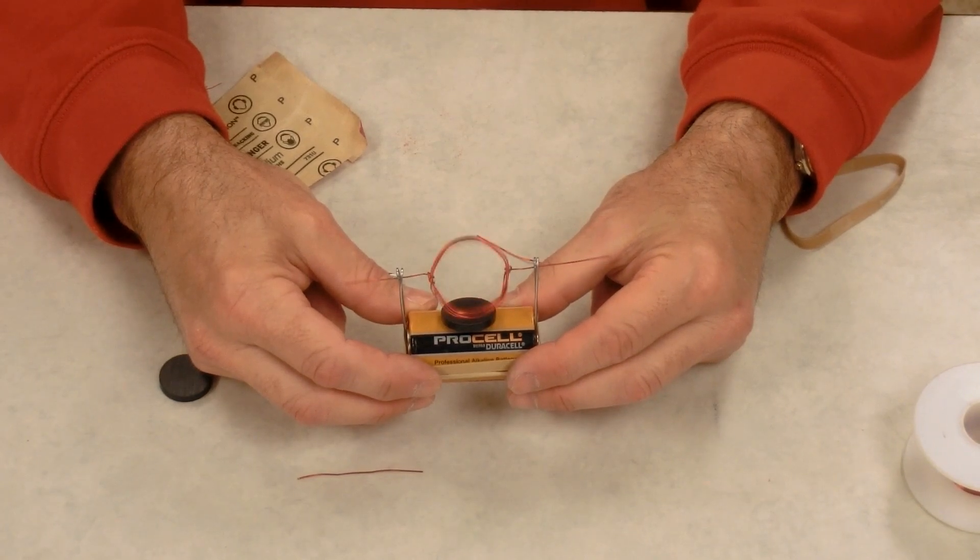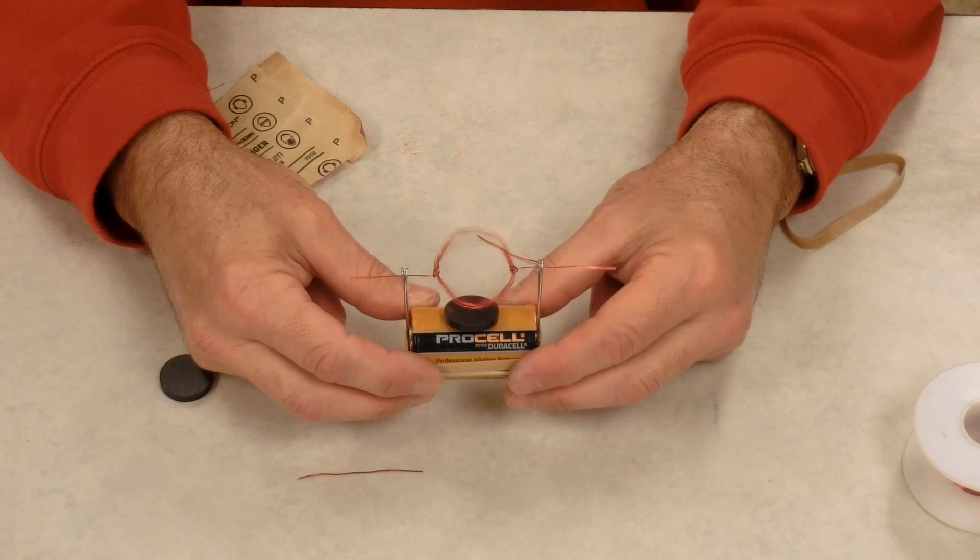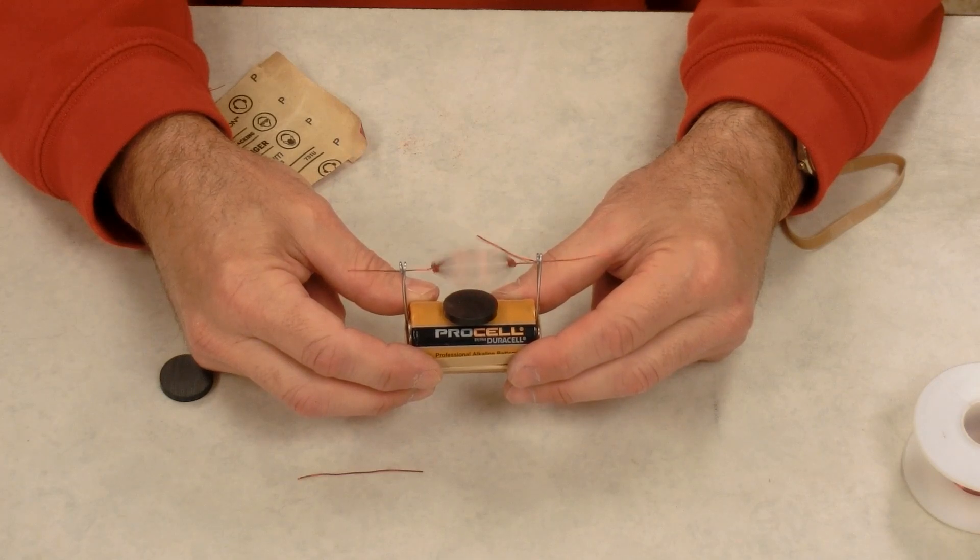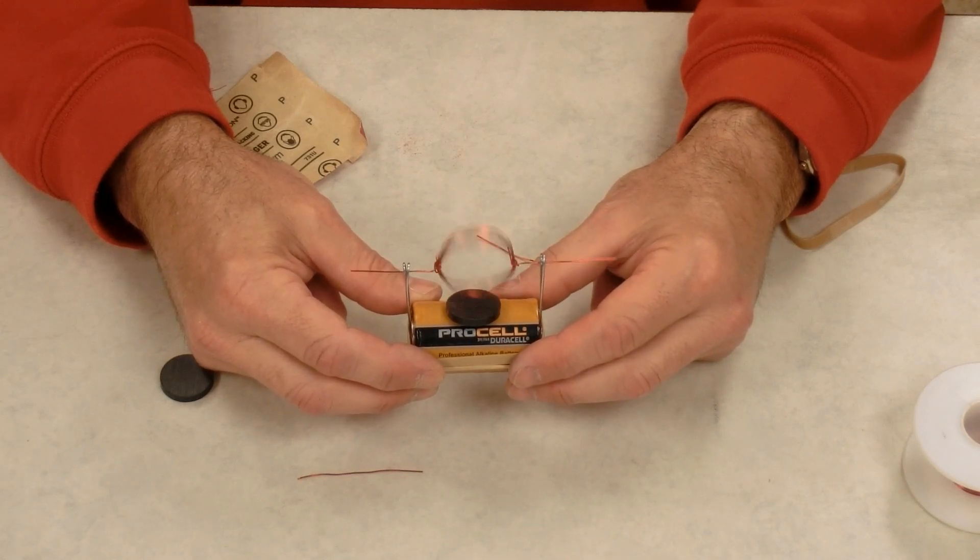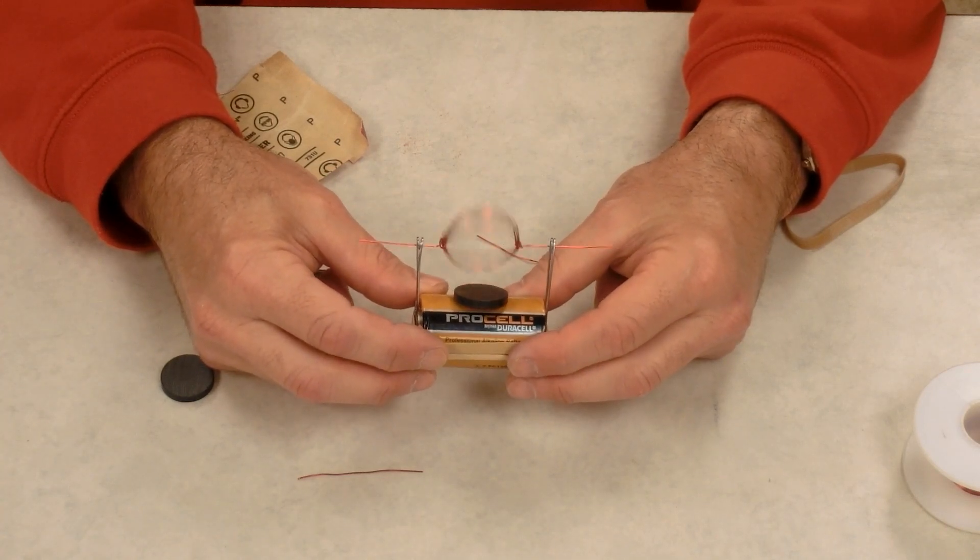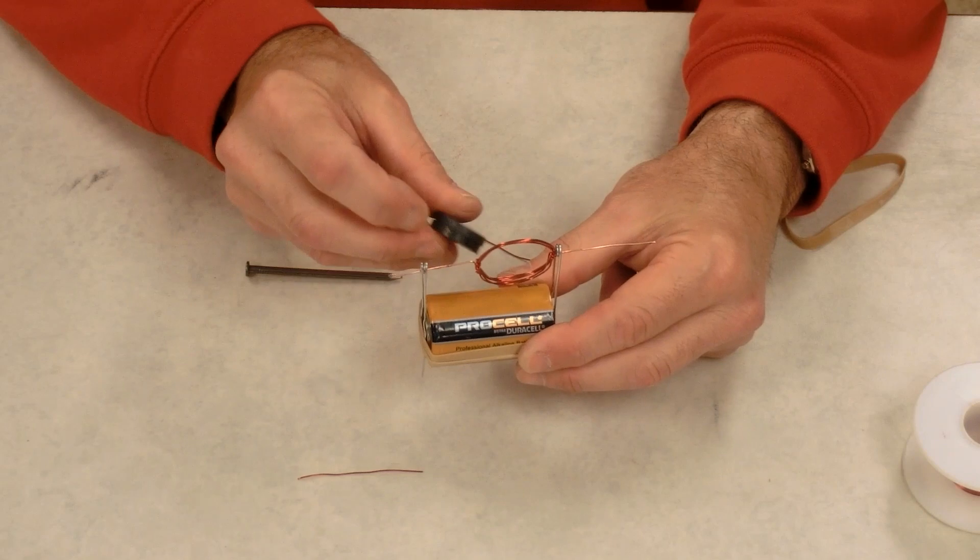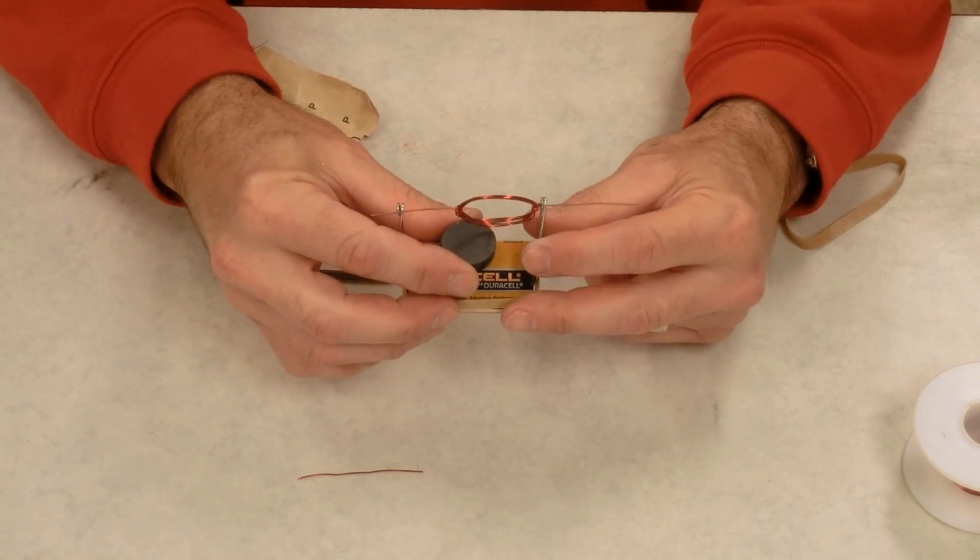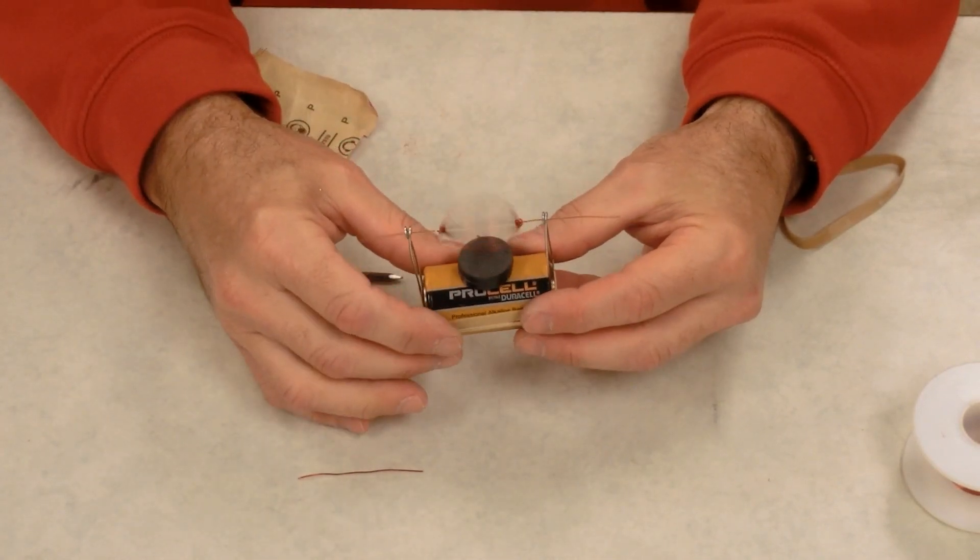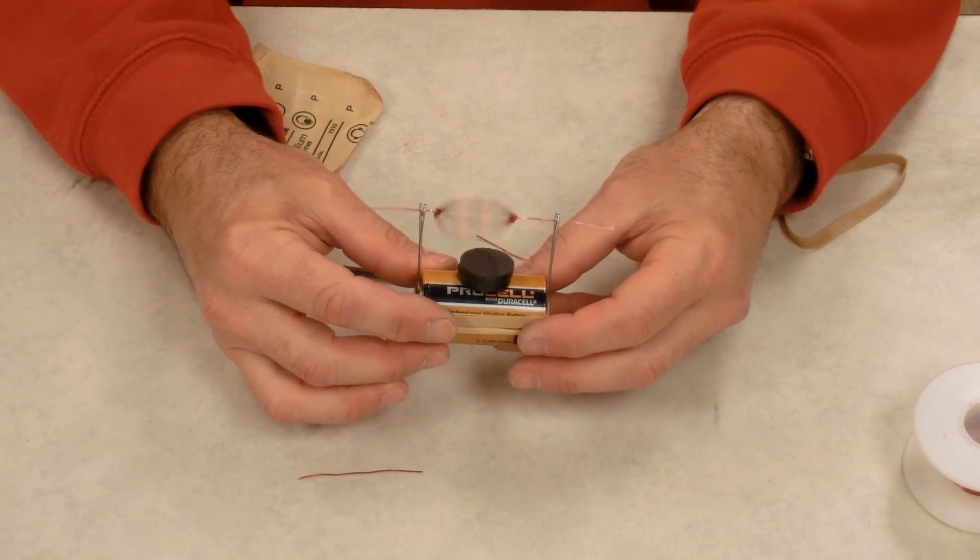Now if you don't scrape properly, it's not going to work. So if you scrape too little, you can always scrape more. If you scrape too much, well, you're in trouble, but you don't have to start all over with a new wire. You can use a Sharpie and paint insulation back on your wire lead and then re-scrape. Sometimes if it doesn't work with one magnet, if you put a second magnet in, that'll make the magnetic field stronger and make it more likely to spin. And if it was already spinning like mine was, having two magnets makes it spin faster.